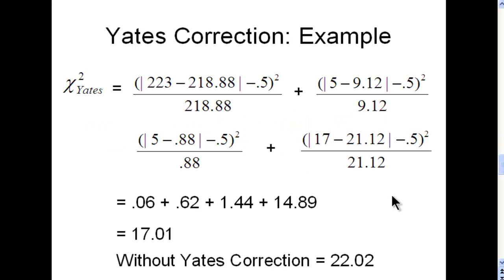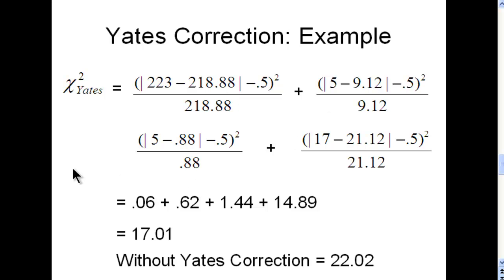Here's an example, and this is a Pearson chi-square. In this case, 223 was the observed frequency, and then 218.88 was the expected frequency. So we subtract that absolute difference, and then we subtract 0.5 from that, and then we can square and then divide. Again, I have another video that goes through these calculations. We do that for each of the four cells within the 2x2 table. For Pearson chi-square, it's always four cells. With McNamara, it's only two cells.